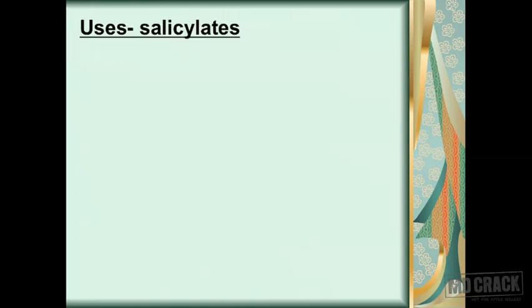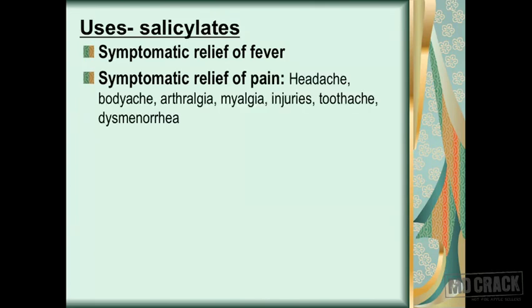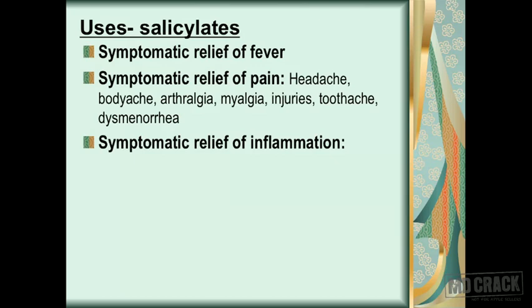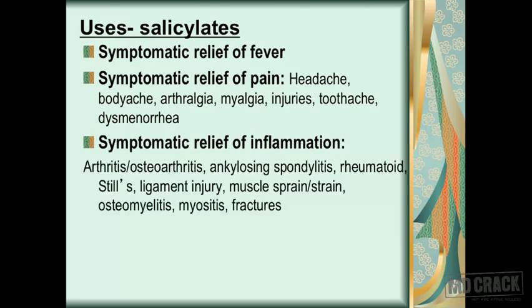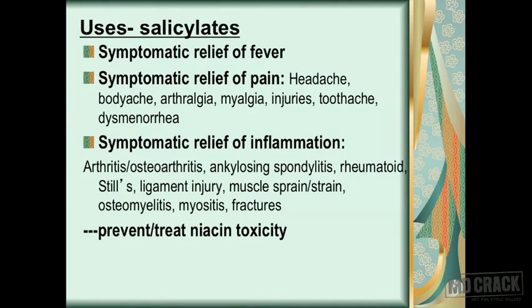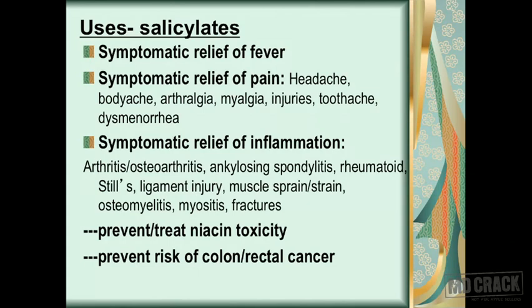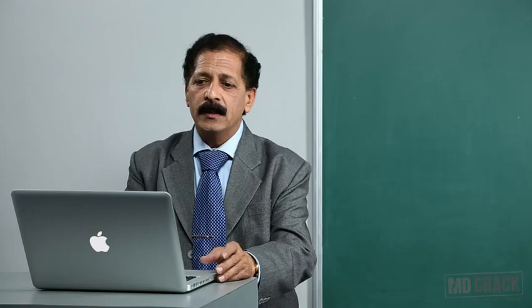The uses of salicylates include: symptomatic relief of fever; symptomatic relief of mild to moderate pain from joints, tendons, ligaments, bursa, and injury; symptomatic relief of inflammation in conditions like arthritis, osteoarthritis, rheumatoid arthritis, myositis, and osteomyelitis. It is used to prevent or treat niacin toxicity. An important proven use is that aspirin may prevent the risk of colon or rectal cancer.